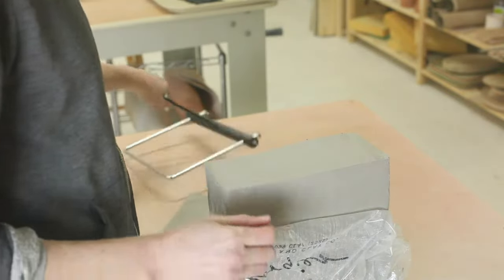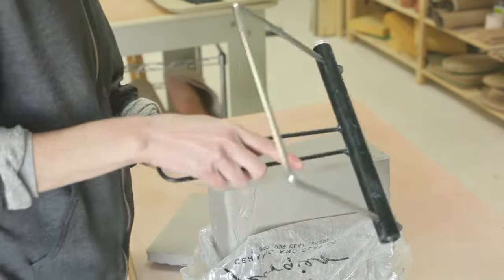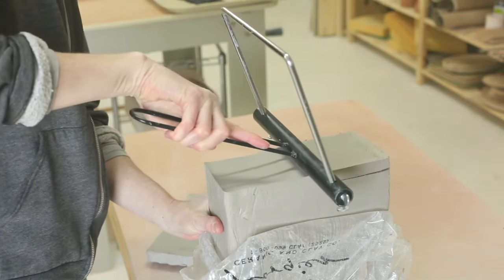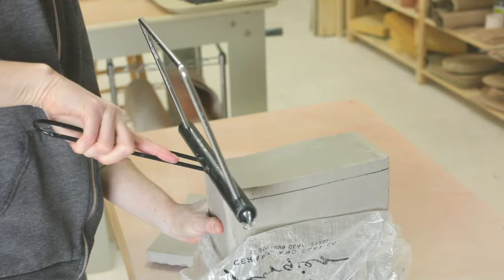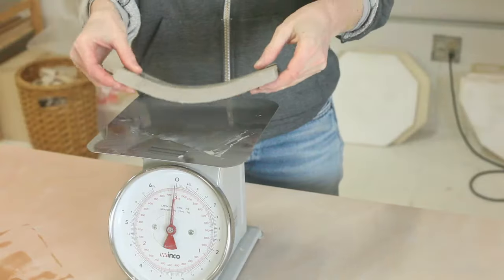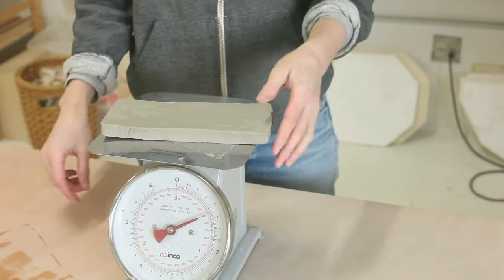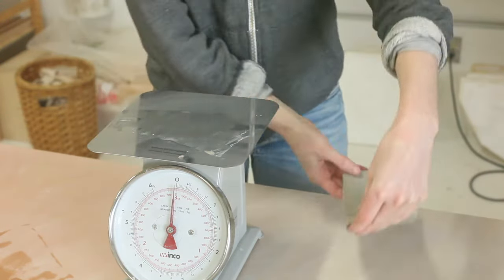This is another wire cutting tool but it holds the wire in place for you. Just keep the black bar flush against the clay as you pull it towards you. I weigh the clay to make sure I have enough for what I'm trying to make. For a mug I need about a pound and a quarter to a pound and a half.